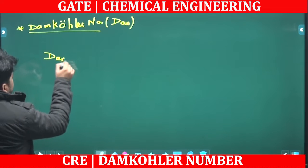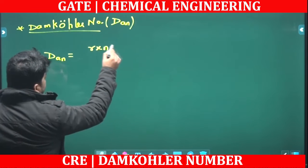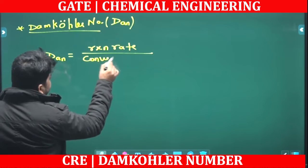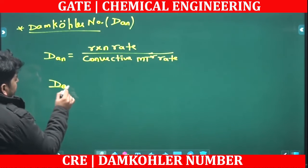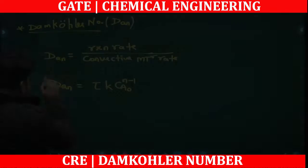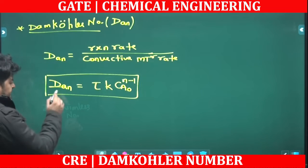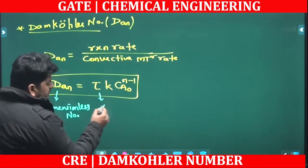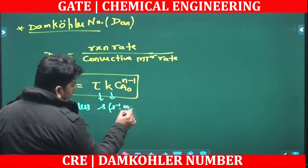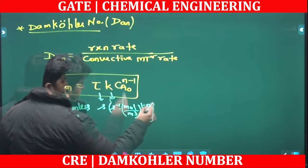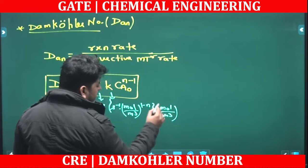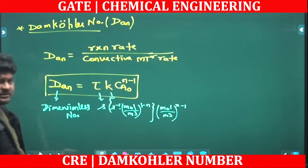The Damköhler number can be defined as the ratio of reaction rate to the convective mass transfer rate. Mathematically, it is defined as tau times k times Ca0 to the power n minus 1. This is a dimensionless number — the unit of tau is seconds, k has units of inverse seconds times mole per cubic meter to the power 1 minus n, and Ca0 to the power n minus 1 has units of mole per cubic meter to the power n minus 1, confirming it is dimensionless.